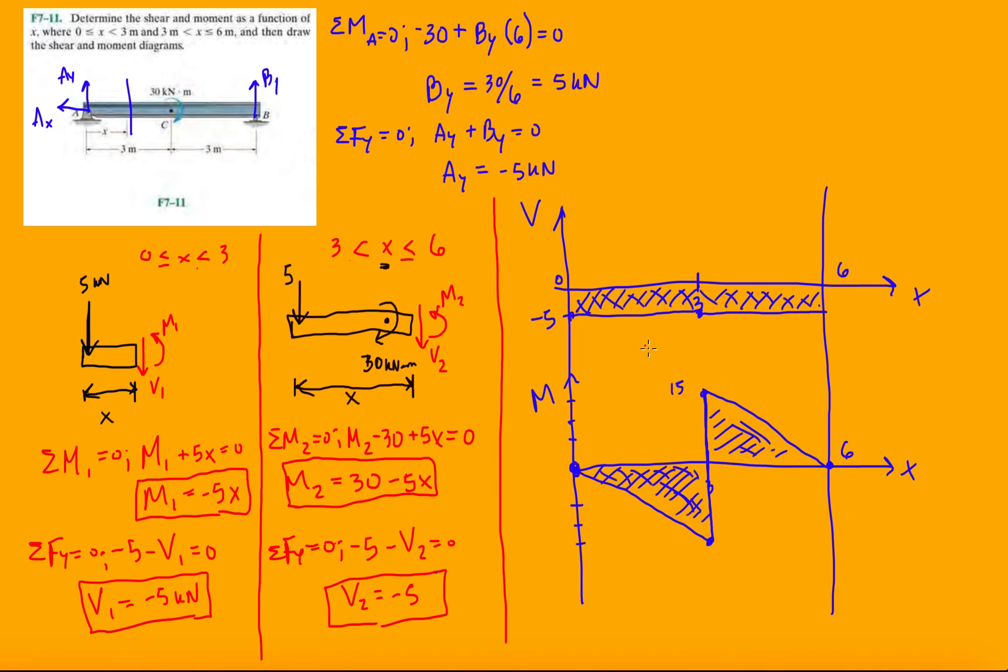So this is what your shear and moment diagrams will look like. I hope you're able to keep up with this. The next one, 7-12, will be very similar except we're going to have a moment along the beam and also a concentrated load across it. I'll see you in the next video. Thanks for your time guys, take it easy.